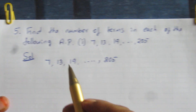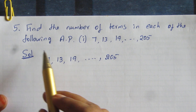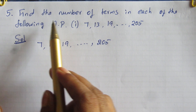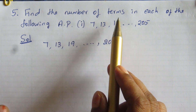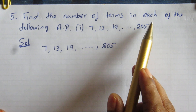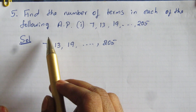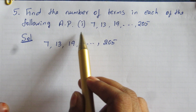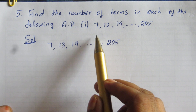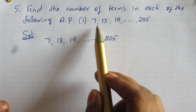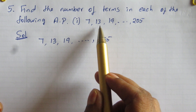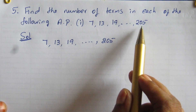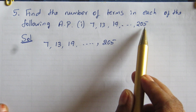Students, let us solve the 5th question. Find the number of terms in each of the following AP. The first sub-question is 7, 13, 19, up to 205.